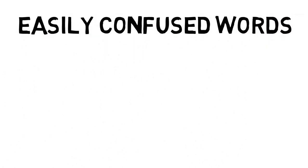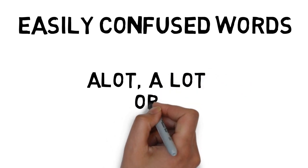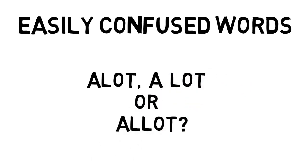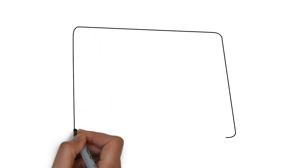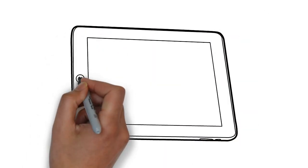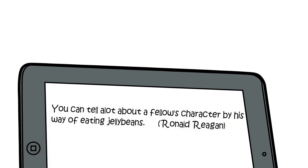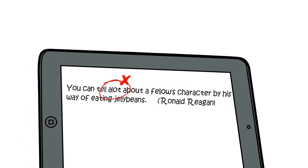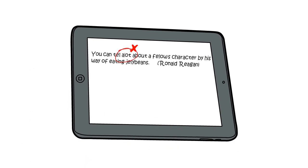In this video, we're going to look at whether you should write a lot without a space, a lot with a space, or a lot with two L's. Here's a wrong example. This is a badly transcribed quotation by President Ronald Reagan: 'You can tell a lot about a fellow's character by his way of eating jelly beans.' Now, this is a mistake, and we'll talk about why in a second. A mistake involving a lot is a howler, and you are being judged.